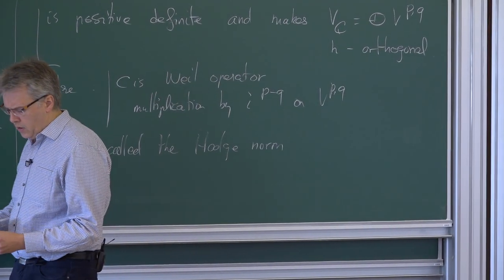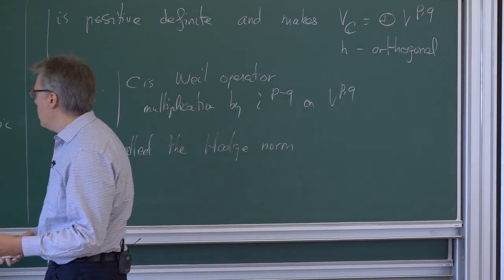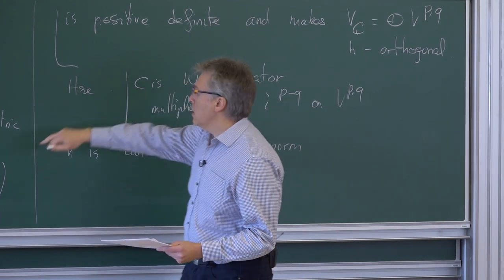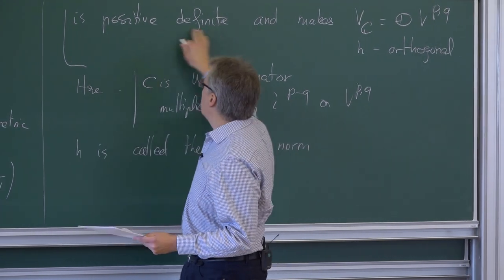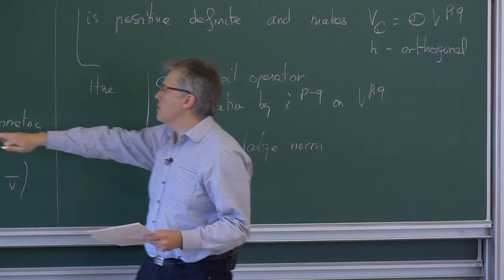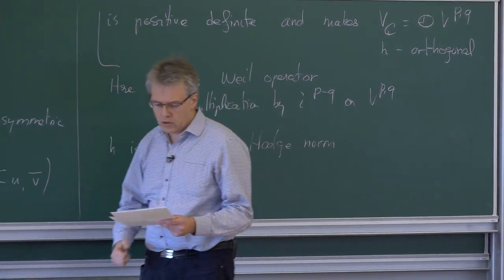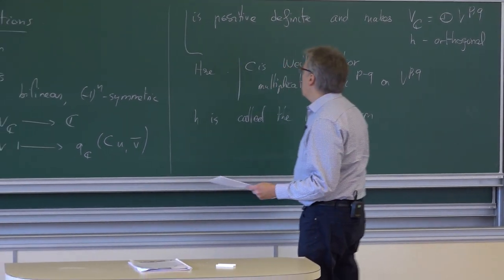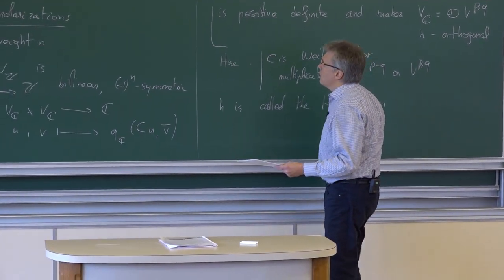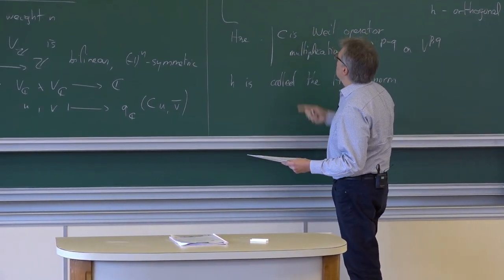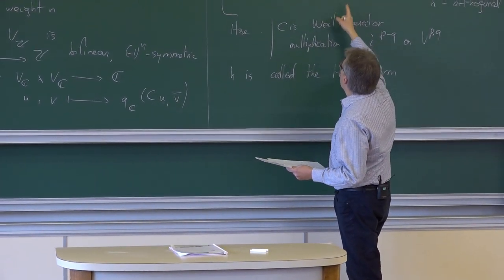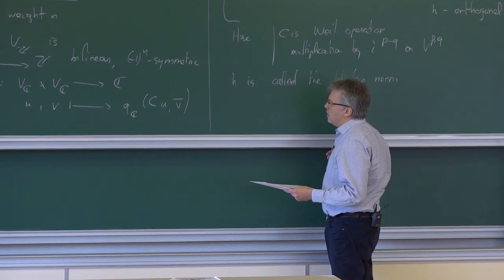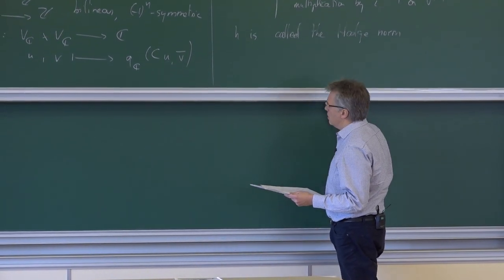H must also make the Hodge decomposition orthogonal, meaning V_C = ⊕ V^{p,q} is orthogonal under H. These conditions are called the Hodge-Riemann bilinear relations and come from the geometric setting. Because H is positive definite, this implies that Q is non-degenerate.